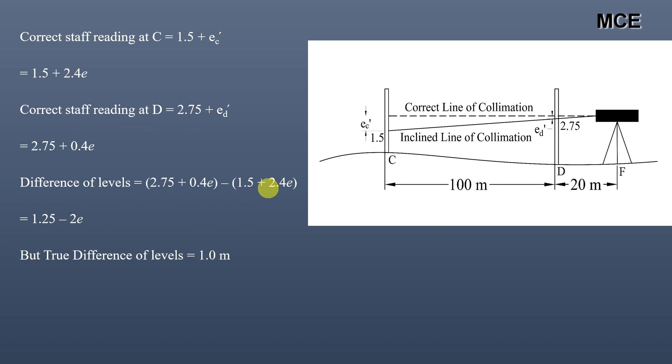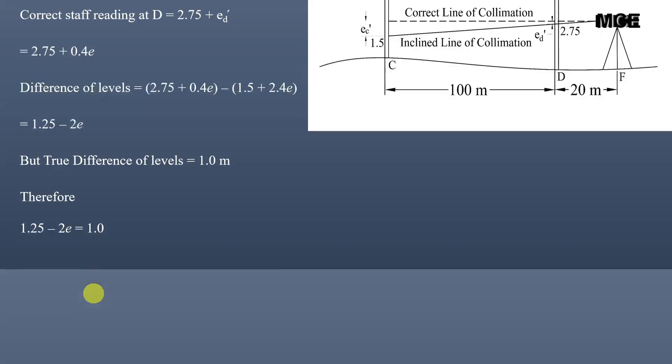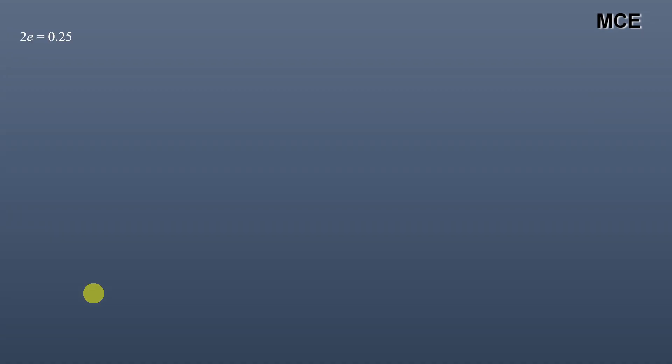We already know the true difference of level is 1m, so we equate: 1.25 minus 2E = 1, giving 2E = 0.25 and therefore E = 0.125m. Since E is positive, it confirms that the line of sight is inclined downwards — our assumption was correct. If E had been negative, it would have meant the line of sight was inclined upwards.